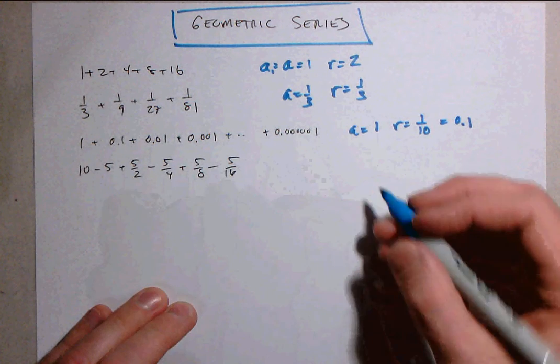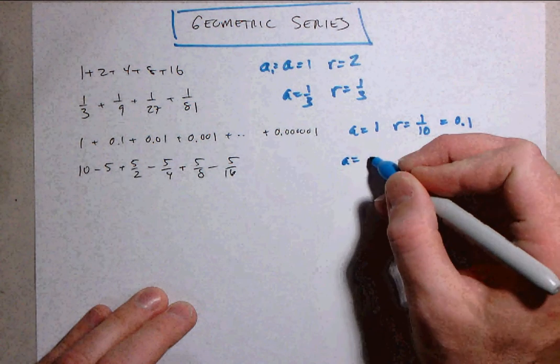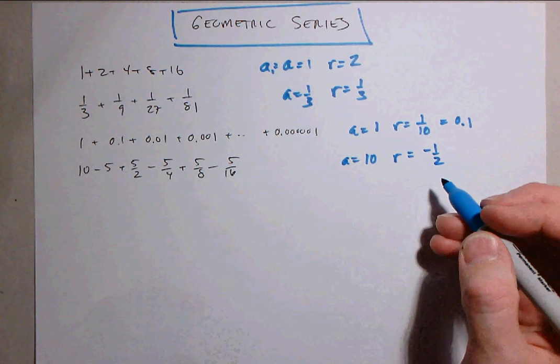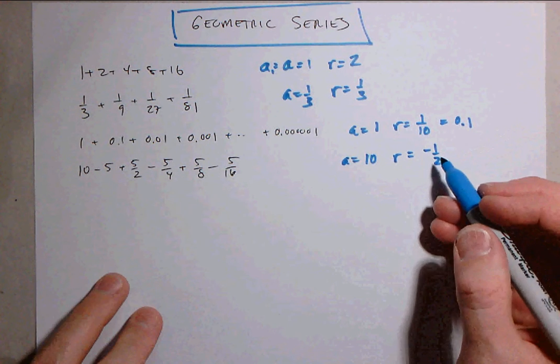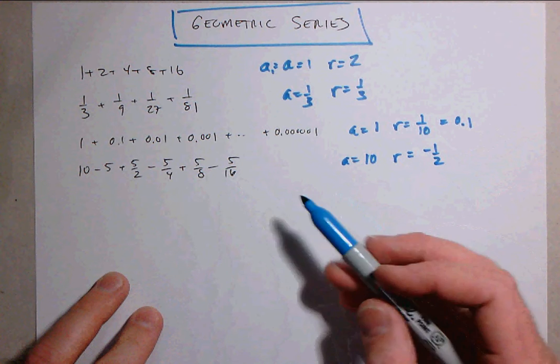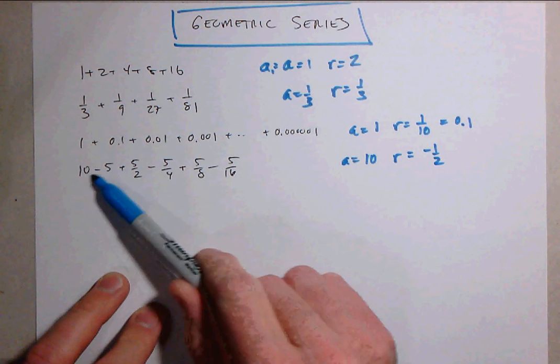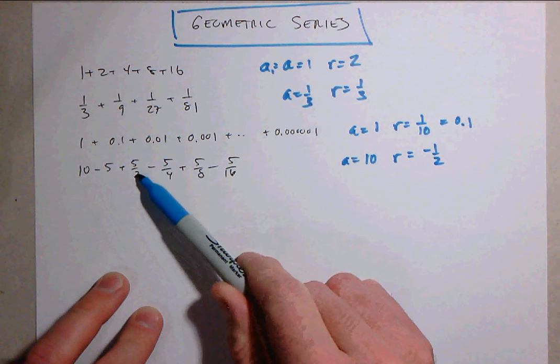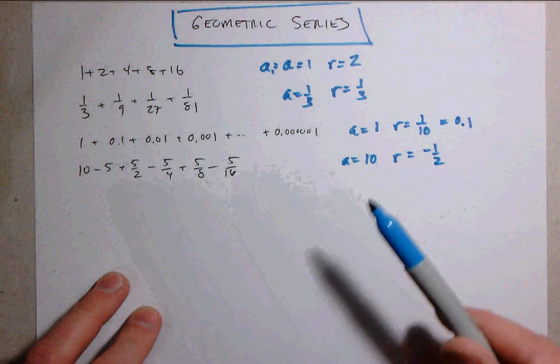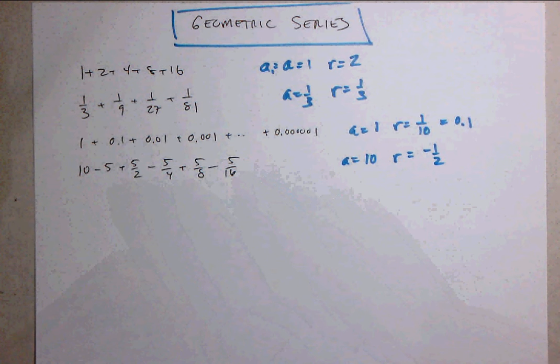And then in this final example we see that the first term is 10 and the common ratio is negative 1 half. So the common ratio can be negative and when it is that produces an interesting alternation in the geometric series. Notice that the terms go from positive to negative to positive to negative.